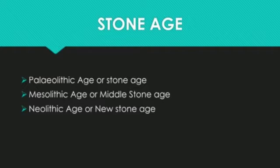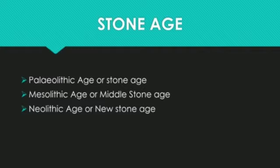Evidences indicate that human species may have developed in Africa, as this area has a favorable climatic condition for the evolution of human life. It is believed that later on, the human species may have wandered into Asia, Europe, and America. Our information about early man is based on the remains of objects, fossils, and tools that have been excavated from different parts of the world by archaeologists. Most of the tools are made of stone.